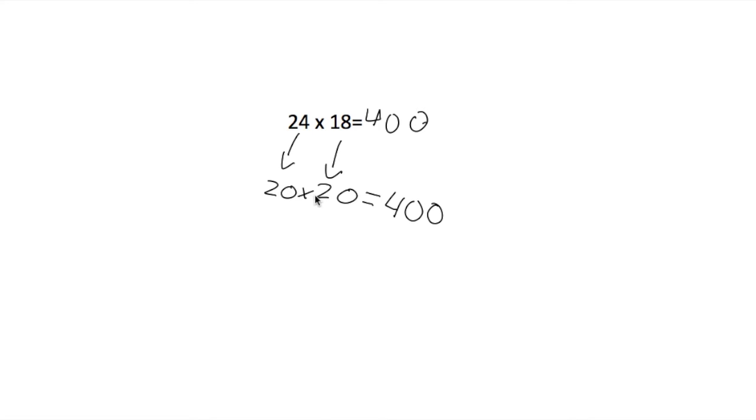So then we do 20 times 20 equals 400. So our estimate will be 400 and that is why we round 24 times 18: round 24 to 20 and 18 to 20.